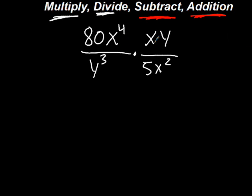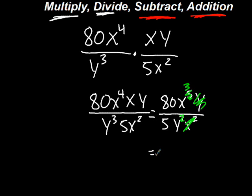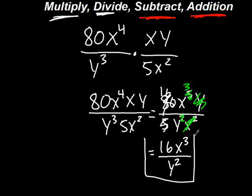We just smash them together. I end up getting 80x to the fourth xy divided by y cubed 5x squared. Let's put these x's together. That ends up being 80x to the fifth times y divided by 5y cubed x squared. We've got to do some slashing. This is going to slash into a 3, and this will slash out, and this will slash out, and this will turn into a 2. The 80 will slash away too. 80 turns into 16. So I end up getting 16x cubed divided by y squared is the end result. And this is simplified.